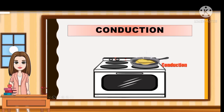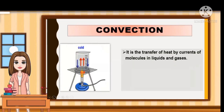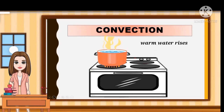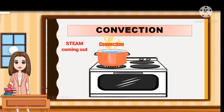Next, we have convection. It is the transfer of heat by currents of molecules in liquids and gases — the transfer of heat by the movement of fluid. Convection happens in liquids. Conduction heats the water at the bottom of the pot. Soon, warm water rises and cooler water sinks. The steam coming out of the hot water in the form of warm air rises because of the heat of the fluid.